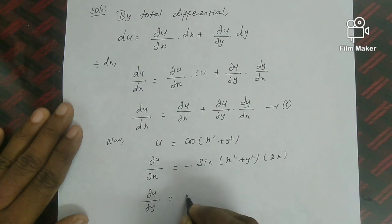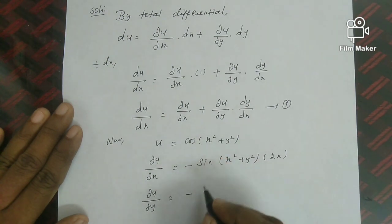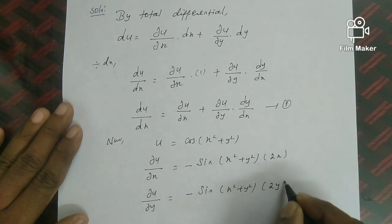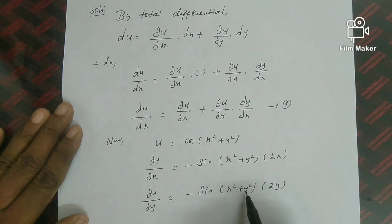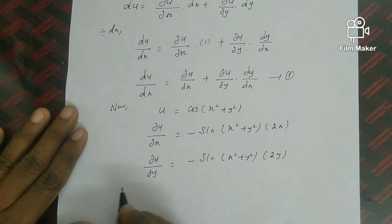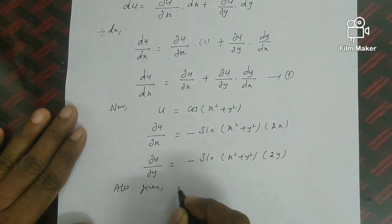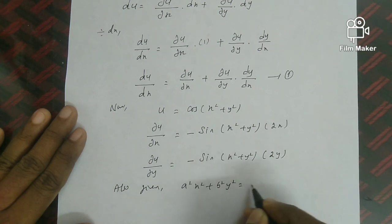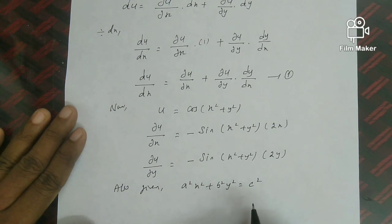Next, from the given equation a²x² + b²y² = c², we find dy/dx. We differentiate with respect to x: 2a²x + 2b²y·(dy/dx) = 0 (since c² is constant, its derivative is 0).